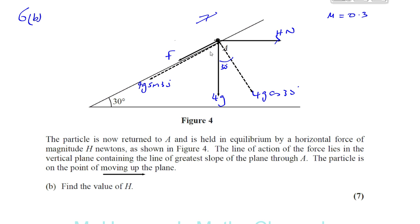The important thing in this question is the friction is acting down because it's on the point of moving up the plane. If it said it's on the point of slipping down the plane, then you'd have the friction acting up. It's on the point of moving up the plane, so the friction must be opposing that.